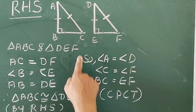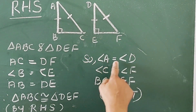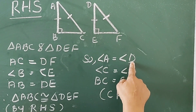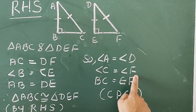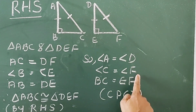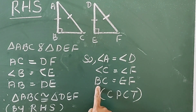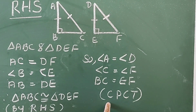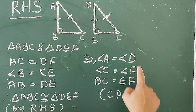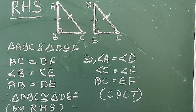So, angle A equal to angle D, angle C equal to angle F, and side BC equal to EF — corresponding parts of congruent triangles.